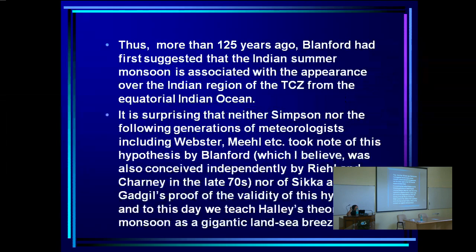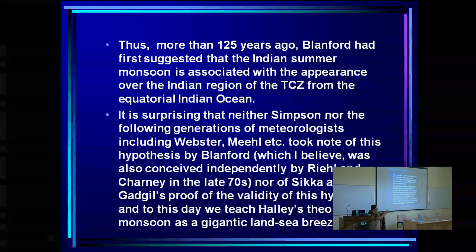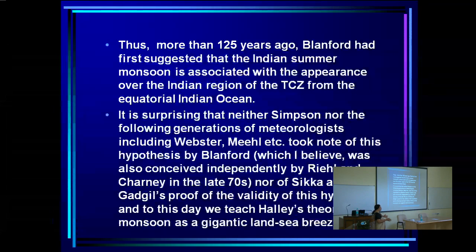This is very much what we understand as the monsoon today, and Blanford had only 15 years of data with very limited ocean data from ships — no satellites. Yet he correctly deduced what is the basic system responsible for the monsoon. It took the satellite era before we could actually do this conclusively. Thus more than 125 years ago, Blanford first suggested that the Indian summer monsoon is associated with the appearance over the Indian region of the tropical convergence zone from the equatorial Indian Ocean.